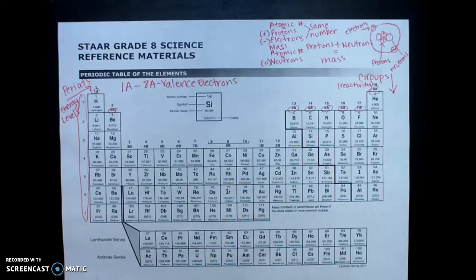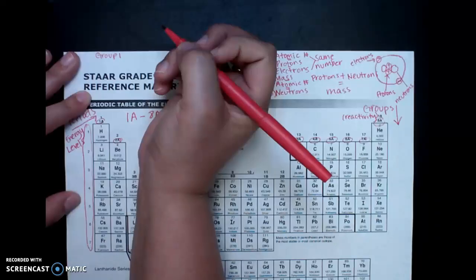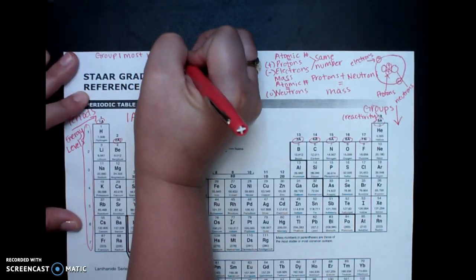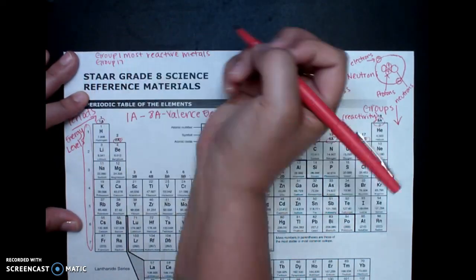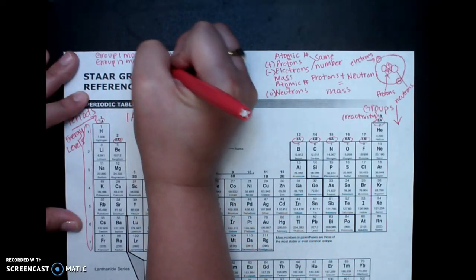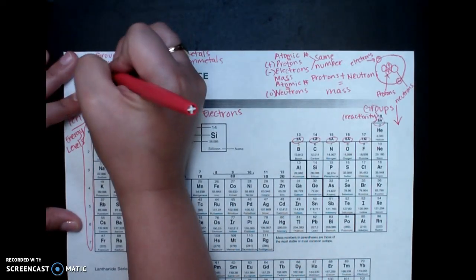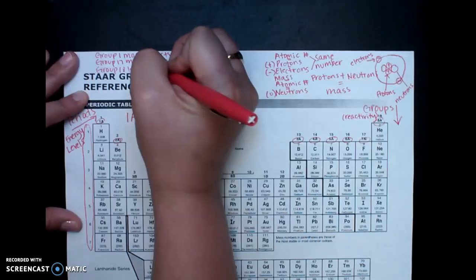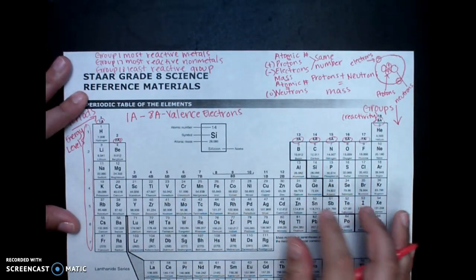Pretty straightforward. The next thing I want you to focus on are three main groups that might come up. The first one is group 1, which is our most reactive metals. The second is group 17, which is our most reactive nonmetals. And the third is group 18, which is our least reactive group. Okay? Let me just let you see.